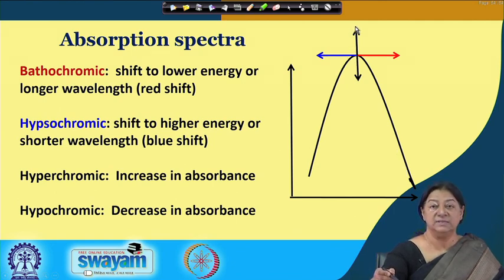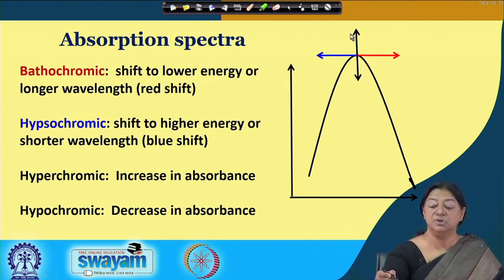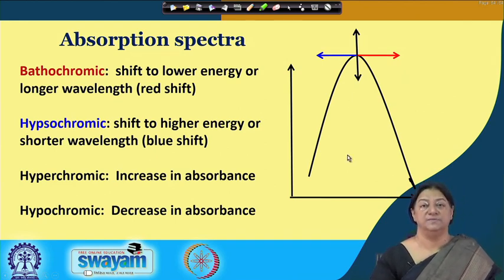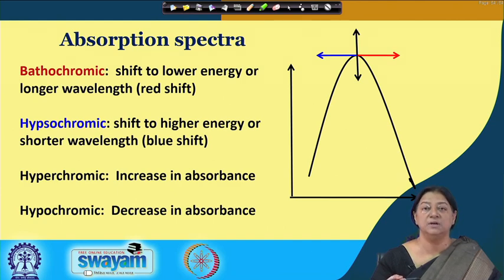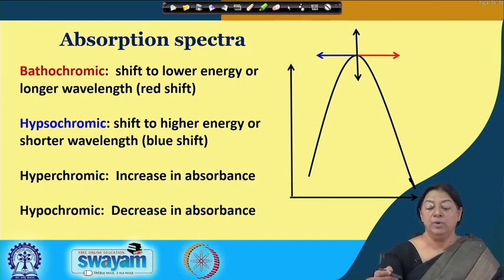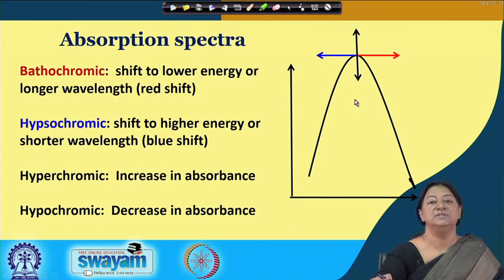The specific peak in the spectrum could be enhanced — a hyperchromic shift meaning an increase in absorbance — or we could have a decrease in absorbance. These are observed when there are specific interactions in the molecules. If the tryptophan is perturbed or exposed, we could see a red shift, a blue shift, an increase in absorbance, or a decrease in absorbance.